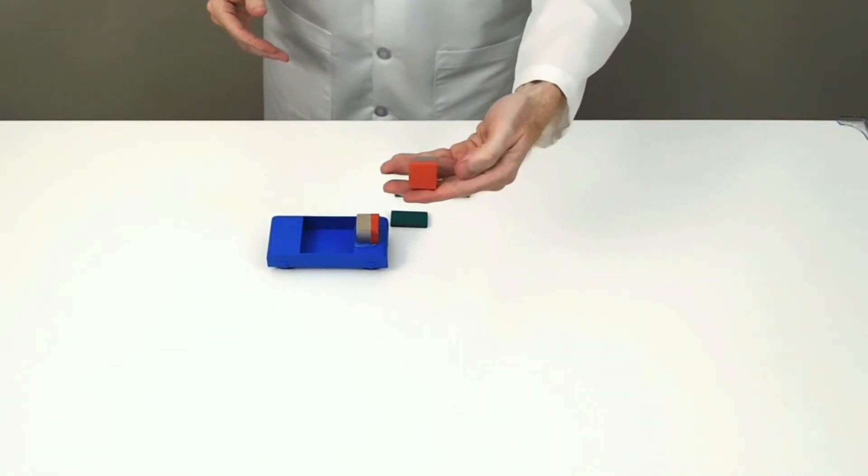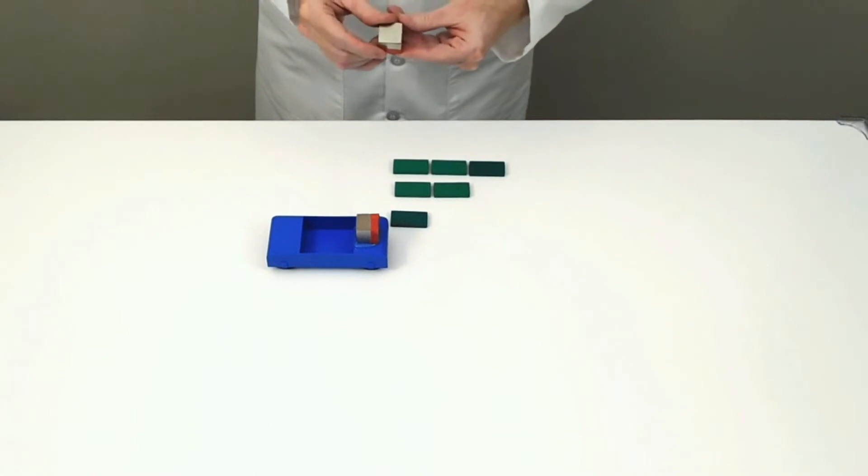We've mounted a magnet on this cart, and we'll hold this magnet with its north pole facing the cart, so the two magnets will repel each other.